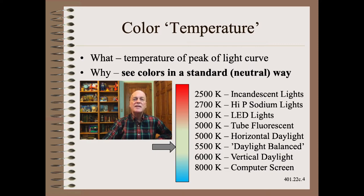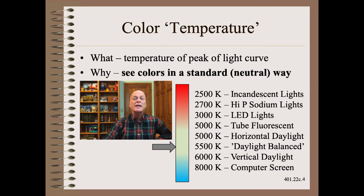If we see what might be a white shirt, our brains process the image to make it appear white, even if it is not actually white due to poor laundry or poor lighting.